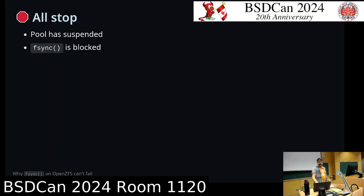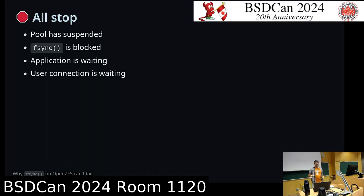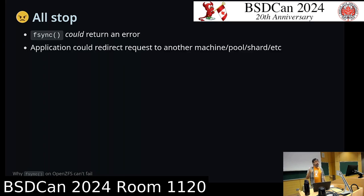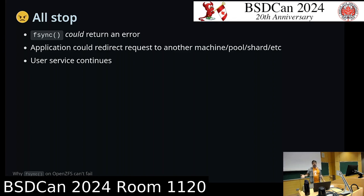This kind of sucks. The pool's suspended, fsync's blocked, the application is waiting, the user connection is waiting. Everyone's just waiting. Maybe that made sense long ago when ZFS was young and you only had one computer. But in any modern distributed system, fsync could return an error, the application could take that and say: I'll redirect you to another node, another shard, another something else, and we'll service the user that way. The computer's still broken, but the user still gets service — which would be much better.